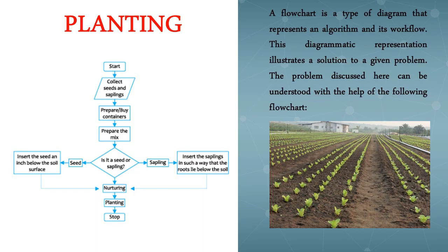After understanding the algorithm, we need to know what a flowchart is. A flowchart is a type of diagram that represents an algorithm and its workflow. A flowchart uses rectangles, ovals, diamonds, and other shapes to define the types of steps, along with connecting arrows to define the flow and sequence of the process. This diagrammatic representation illustrates a solution to a given problem — the problem being to make the environment green, and the solution being plantation. The problem discussed here can be understood with the help of the following flowchart.